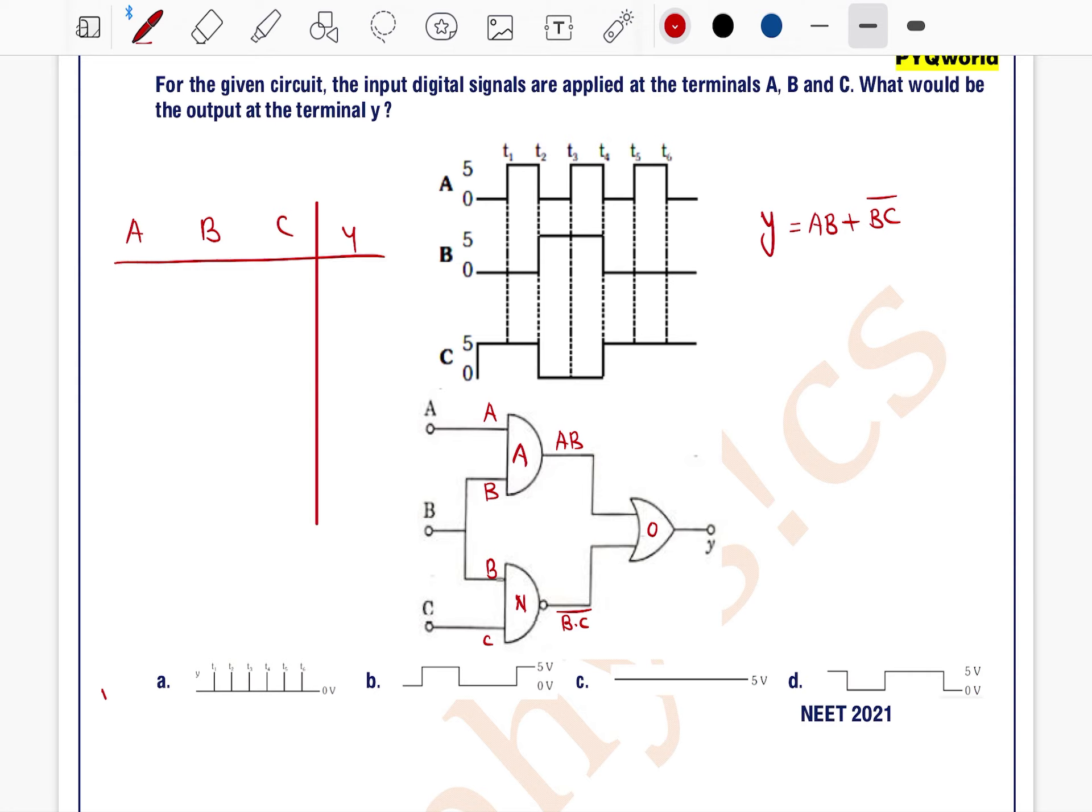Now see at T is equal to 0, T1 cycle. A is 0, B is 0, C is 1. 0 into 1 is 0. 0 bar is 1. The output will be 1. So 0, 0, 0 output will be 1 here.